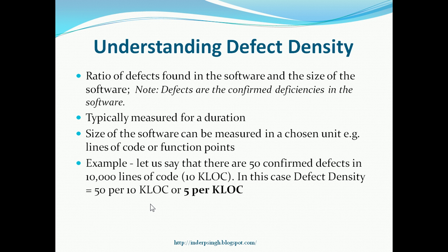Let us see an example. Let us say that there are 50 confirmed defects in 10,000 lines of code, i.e., 10 KLOC. In this case, Defect Density is equal to 50 per 10 KLOC, or 5 defects per KLOC.